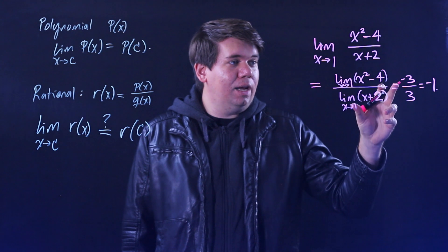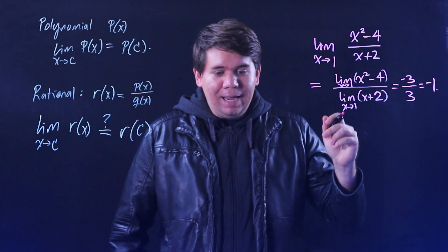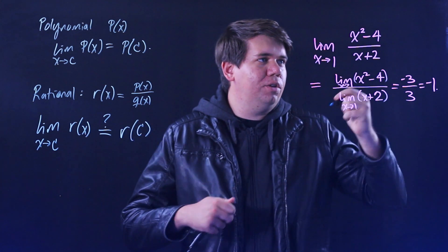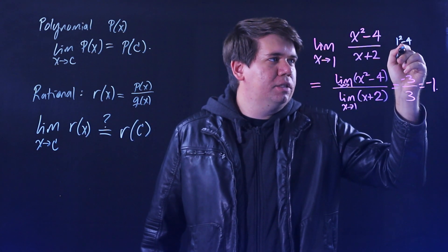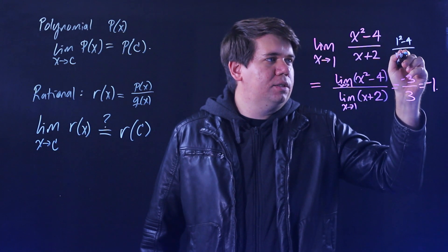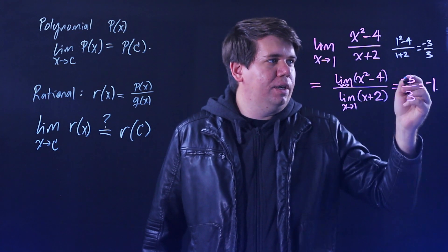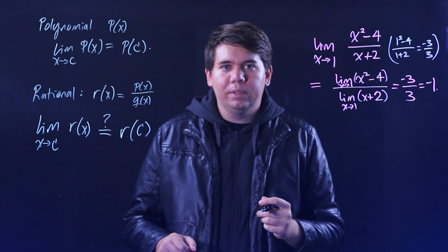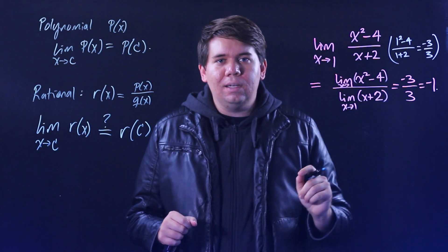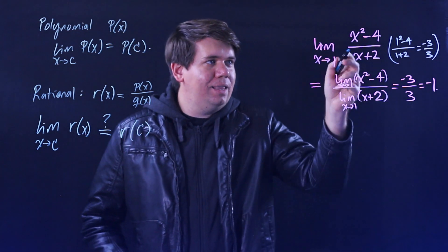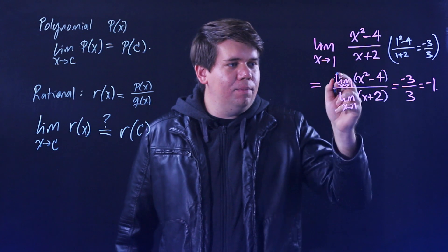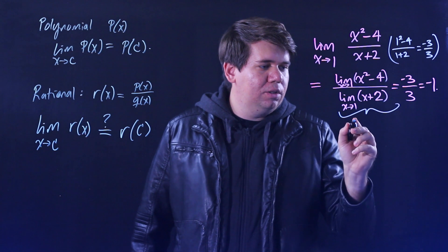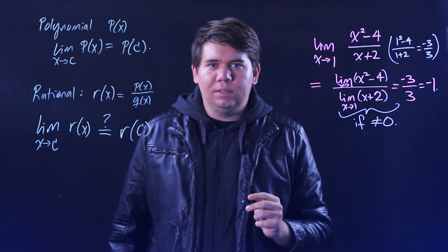You end up with a limit of minus 1. And it seems like that's the same as if you had just plugged in 1 originally, because plugging 1 in gives you 1 squared minus 4 over 1 plus 2, which is minus 3 over 3. It seems like this holds true. But notice there was one vital condition: the limit of a quotient equals the quotient of the limits only as long as the bottom is not 0.